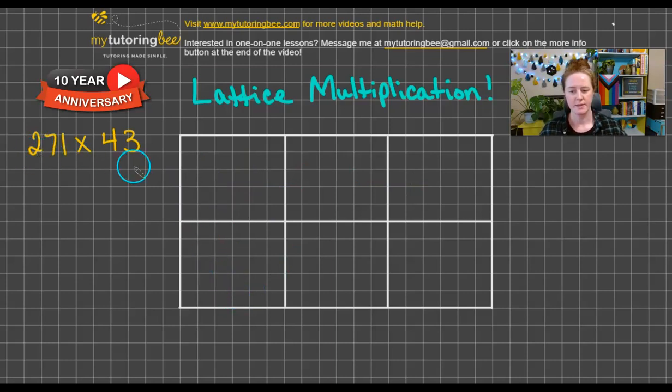This is for my three-digit number going across the top here, and my two-digit number going across the side. So let's go ahead and write those numbers in. I've got 271 going across, and then 43 on the side.